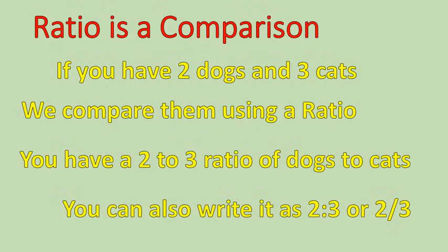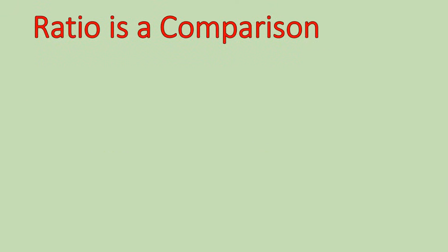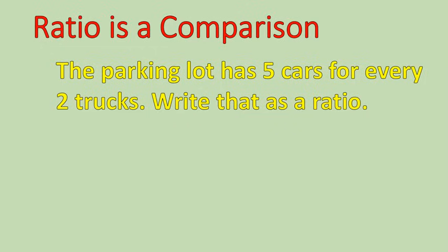So, when we get a word problem, and it says you have two dogs and three cats, write it as a ratio, you could write it as two to three, two colon three, or two over three. That's your ratio of dogs to cats. So, let's do a quick sample word problem. The parking lot has five cars for every two trucks. Write this as a ratio. So, it's a ratio of five cars to two trucks. It's written cars first, trucks second. So, we would write it like this. A five to two ratio. Five to two, five colon two, or five over two. The first number goes first. The second number goes second.